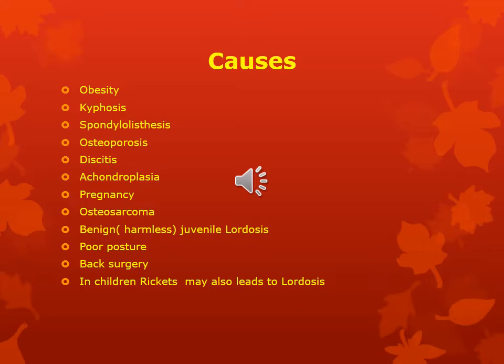Sixth, achondroplasia — that means in this case the growth of the long bone is retarded and it results in very short limbs. The long bone growth of the body is retarded.